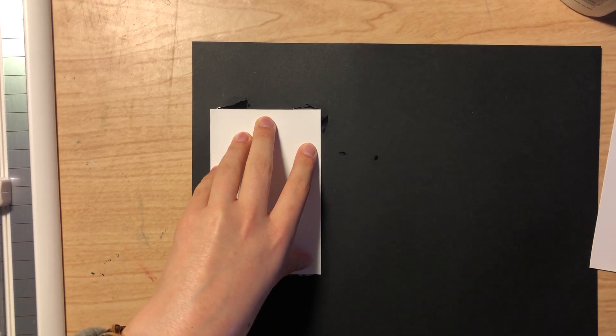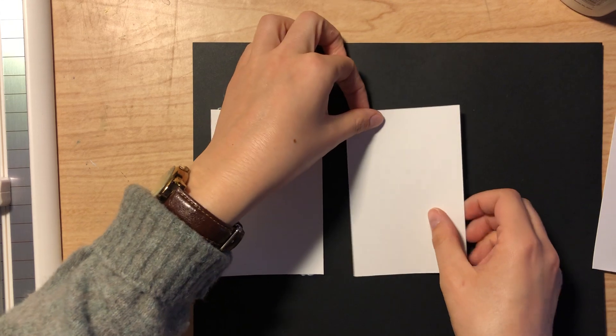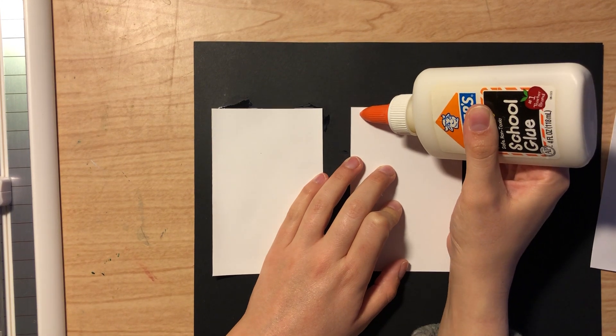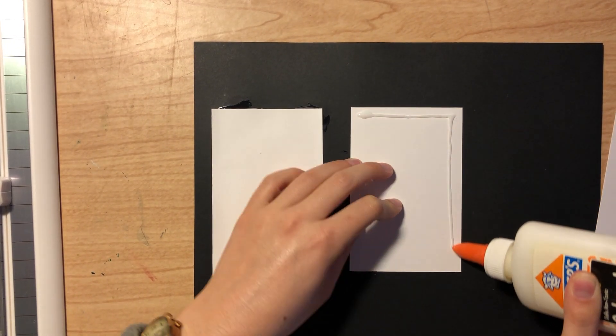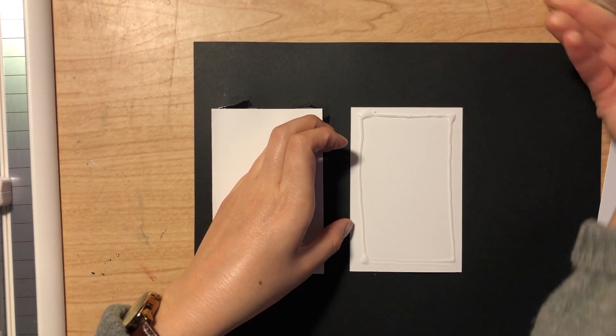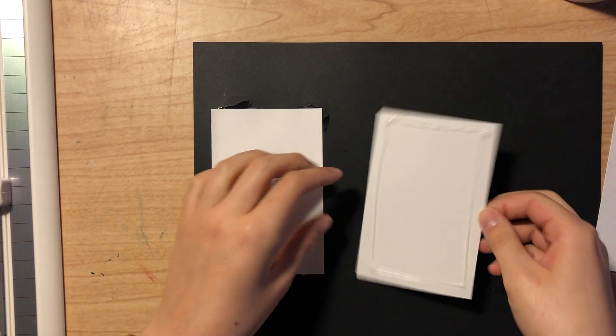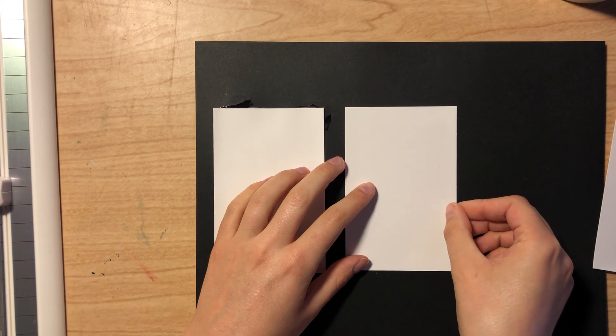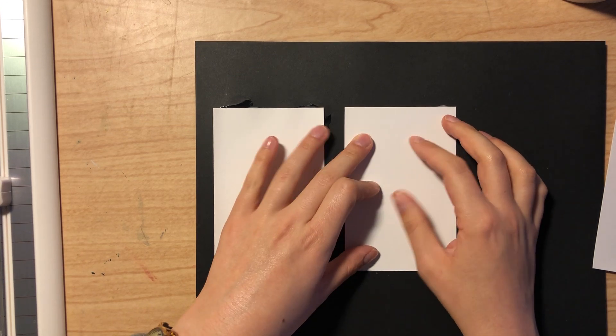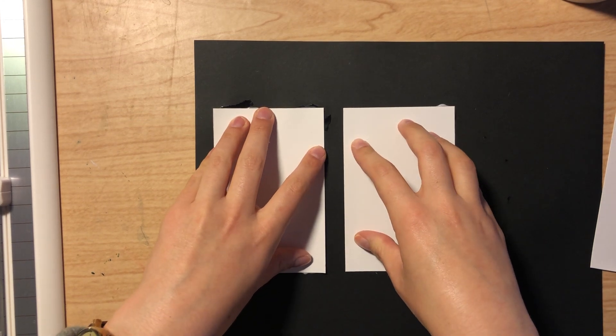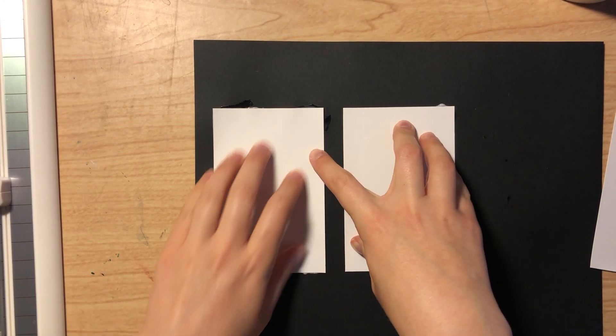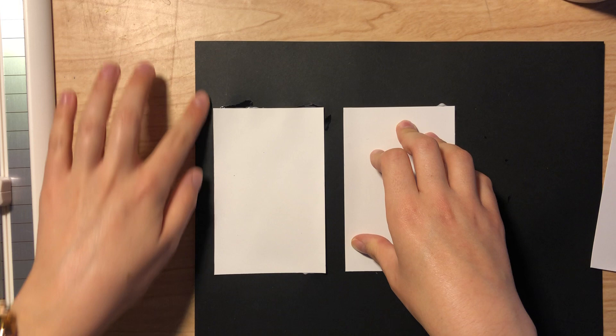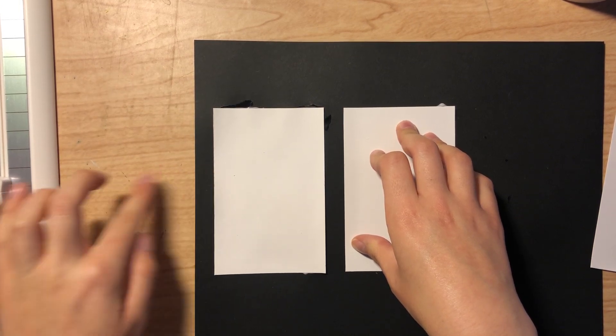And while that's drying, you can pick up your second artwork, flip it over, start doing the same thing. Flip it over and make sure that they're evenly spaced apart.